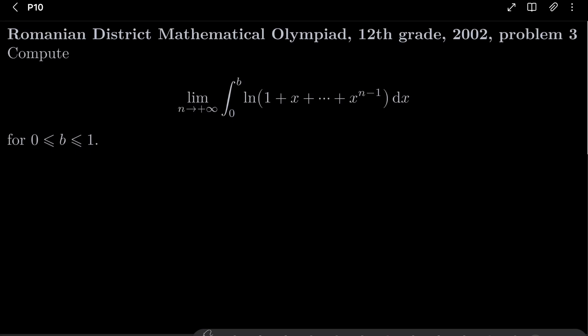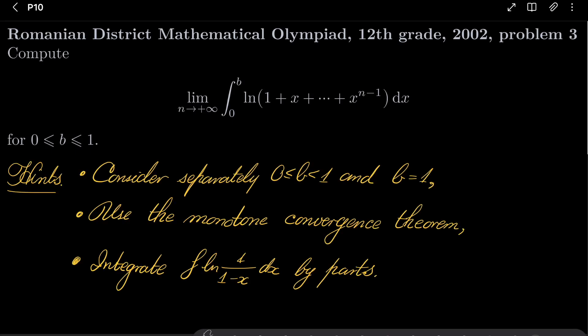So it's a rather simple problem, and here are my hints. Maybe not simple. It's simple if you use the monotone convergence theorem, but first consider separately cases where b is from 0 to 1 but not equal 1 and when b equals 1, or view b equals 1 as a limiting case, and use the monotone convergence theorem.